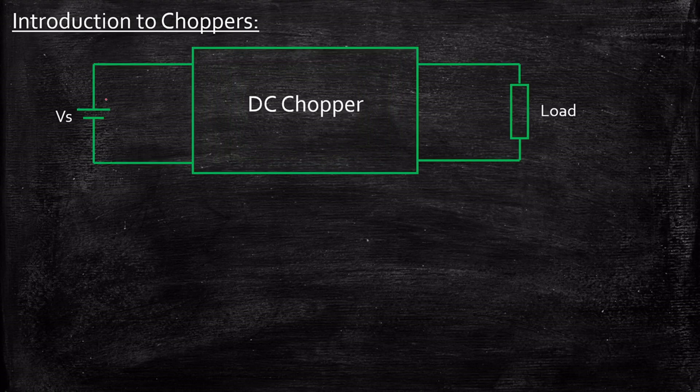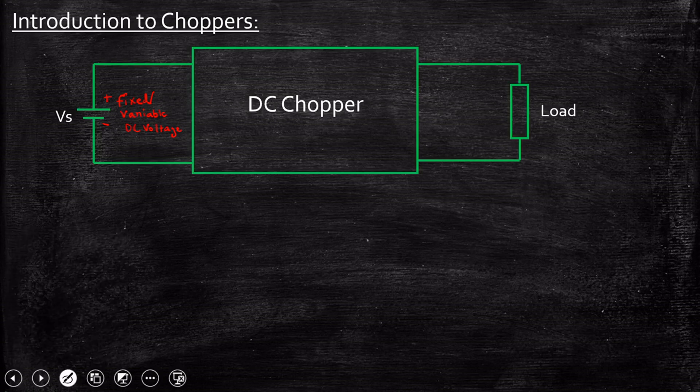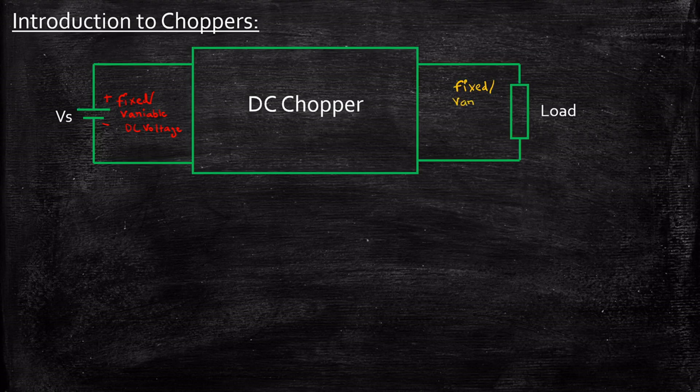At the first place, what is a chopper? Let us say we have a fixed or variable DC input voltage. So when it passes through this particular chopper, which we call as DC chopper, what happens is it's going to convert it to either fixed or variable DC output voltage depending upon our requirement and the circuit that we are considering.